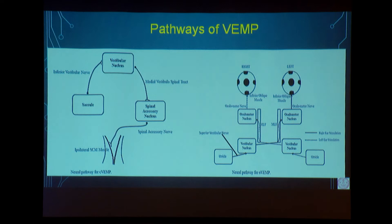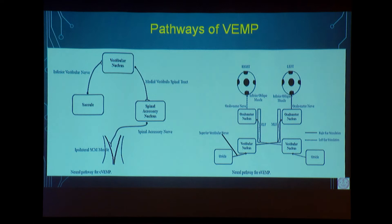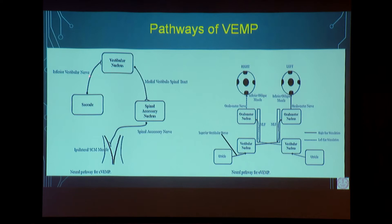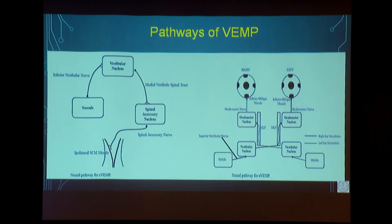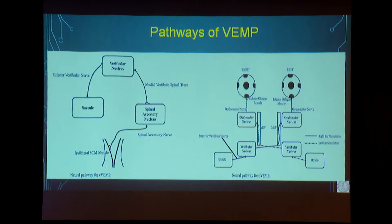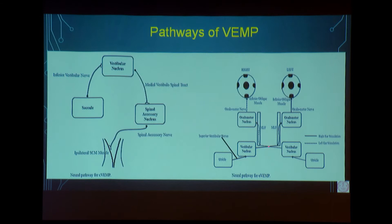In the cervical VEMP pathway, stimulating the saccule generates an action potential in the inferior vestibular nerve, which travels to the vestibular nuclei. Through the mediovestibular spinal tract it reaches the spinal accessory nucleus, then via short connections to the ipsilateral sternocleidomastoid muscle. In the ocular VEMP, stimulating the utricle also goes to the vestibular nuclei but takes a contralateral route, passing through the medial longitudinal fasciculus to supply the inferior oblique muscle.